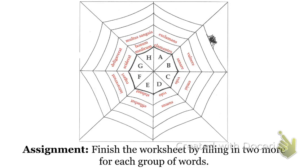Your assignment is going to be to finish the worksheet by filling in two more words for each category, for each group of words. So you are going to fill in two participles, two more infinitives, two more first person verbs. You're going to go through and fill this up. You can turn that in. That is the completion of the assignment, and where you will get credit for what we did in class today.